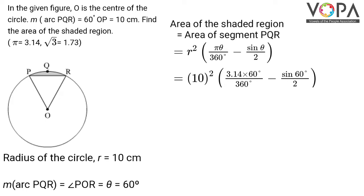Substituting the values: (10)² × (3.14 × 60/360 - sin 60°/2).